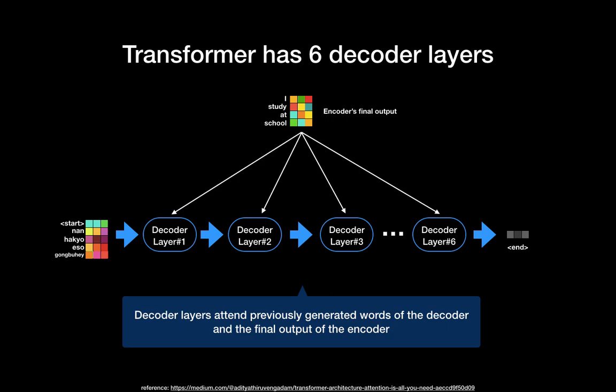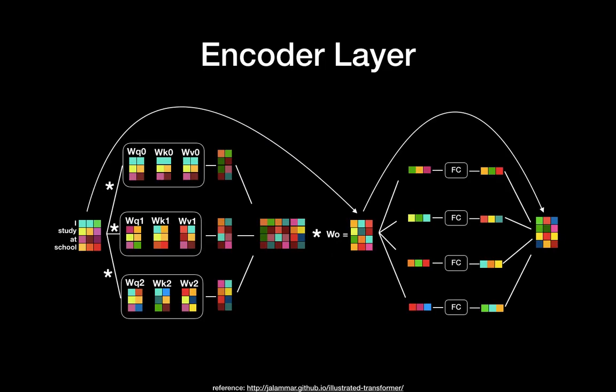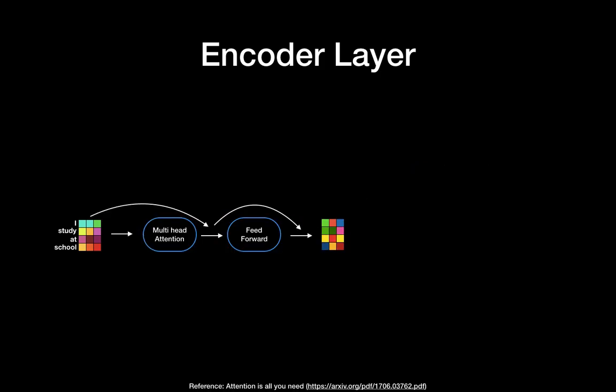The decoder translates 'I study at school' to Korean language. You remember this is the architecture of one encoder layer. Let's simplify it to compare with the decoder. You can now see the encoder has multi-head attention, feed-forward layer, and residual connection here.